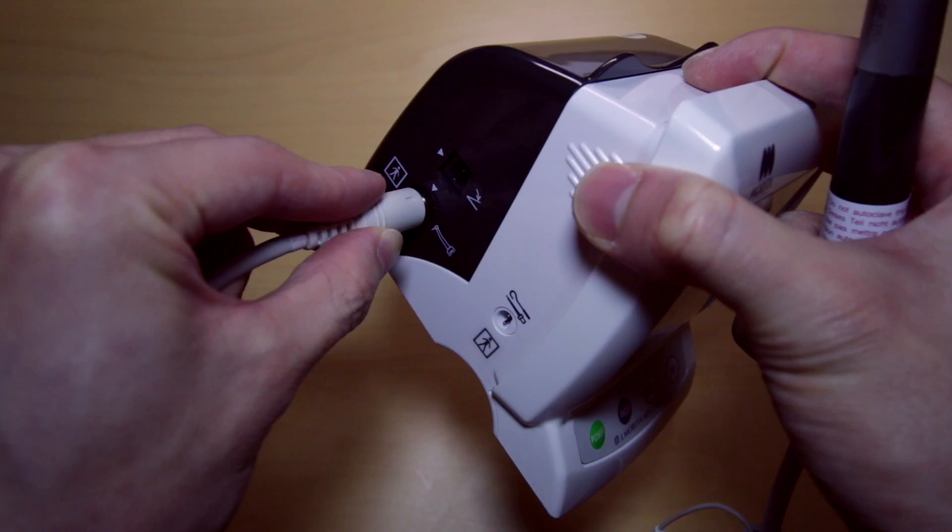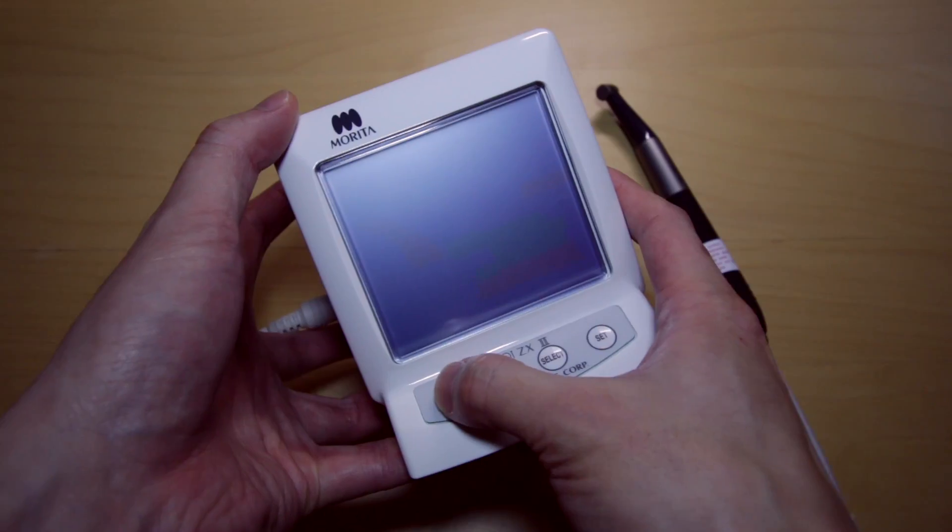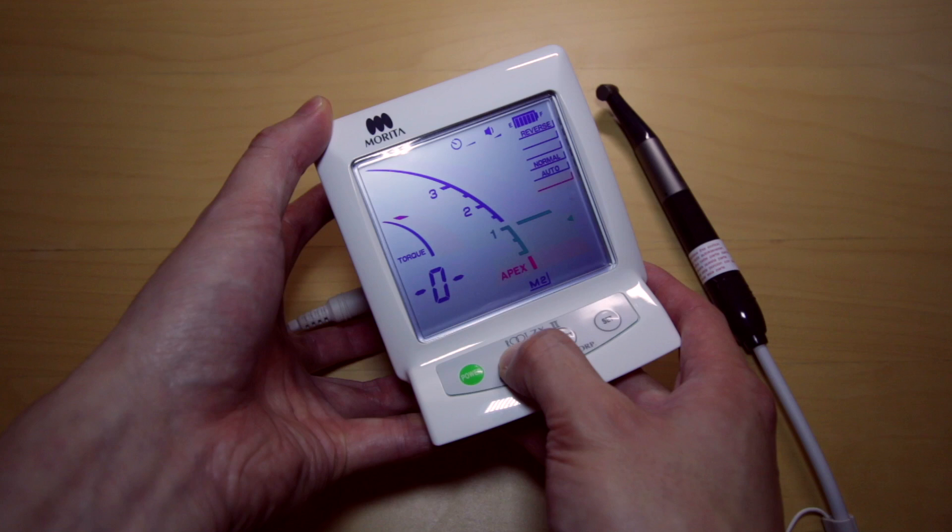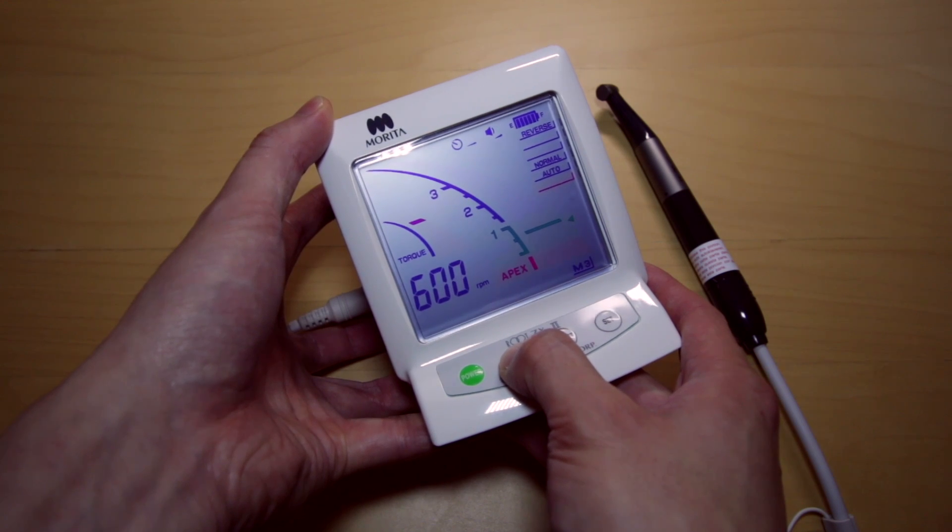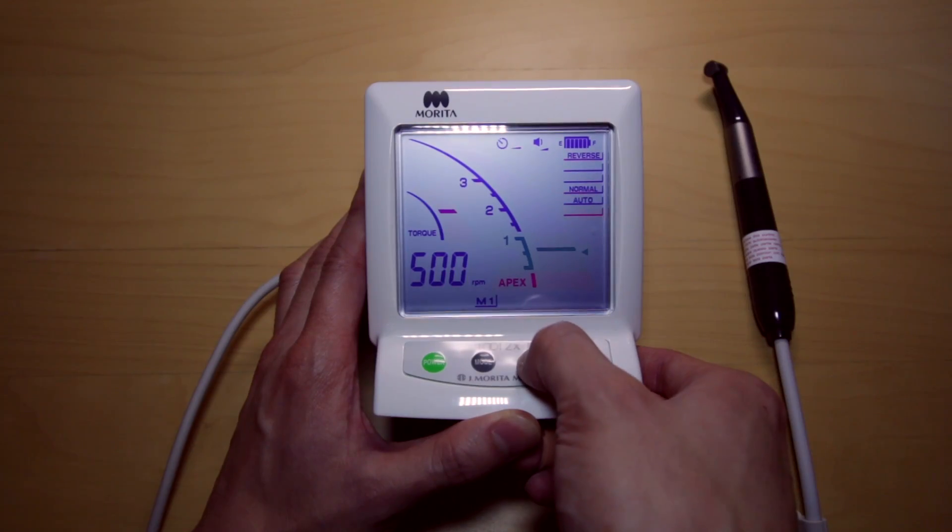Let's install the handpiece first to the side of the module. This automatically engages functions of the rotary. You can then set your ideal torque level, apex location, and RPMs.